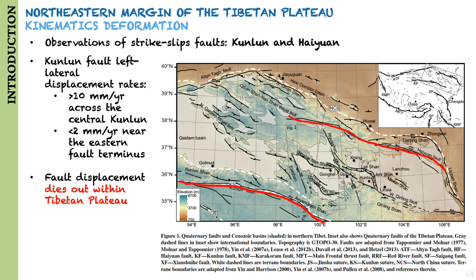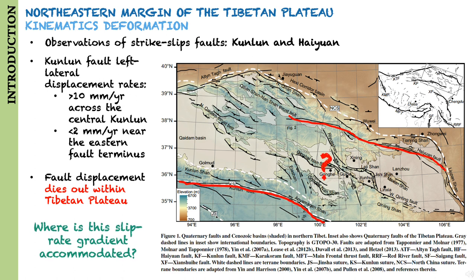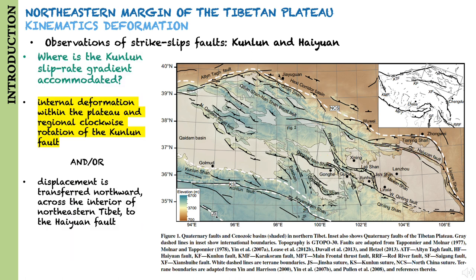If this is so, then where is the slip rate gradient accommodated? Recent studies have suggested that this slip rate gradient may be accommodated by internal deformation within the plateau and regional clockwise rotation of the Kunlun fault.